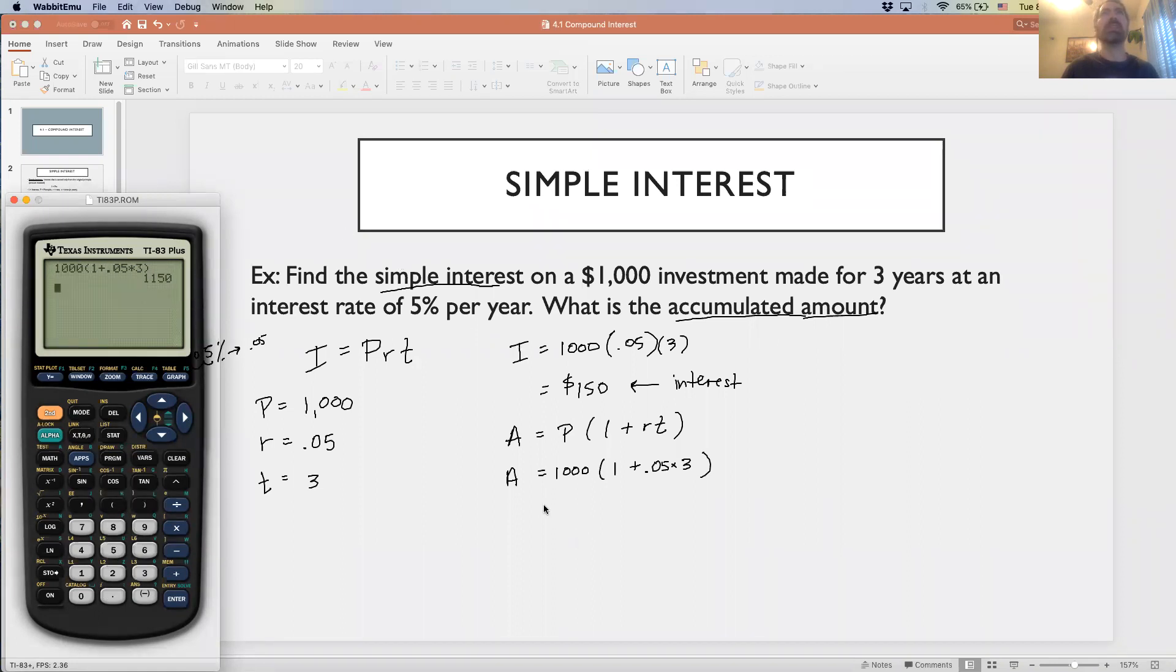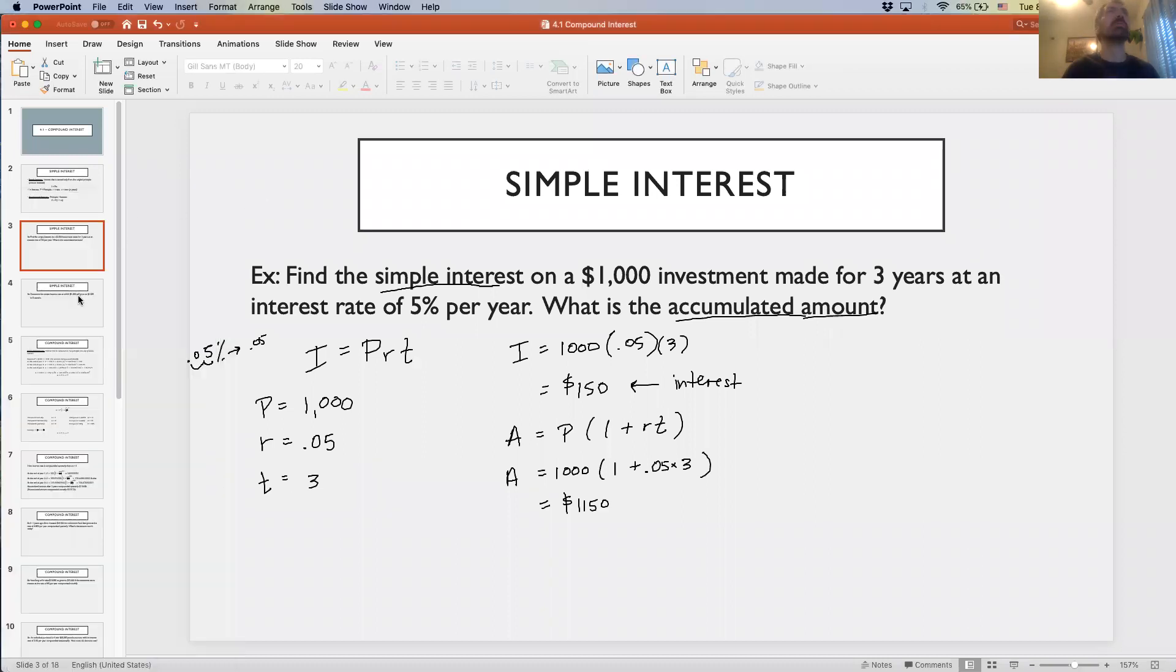We would have gotten the same answer if we had just added $1,000 plus $150. But if the problem were not to have asked you for the simple interest to begin with, but only asked you for the accumulated amount, then it would be advantageous to use this accumulated amount formula.